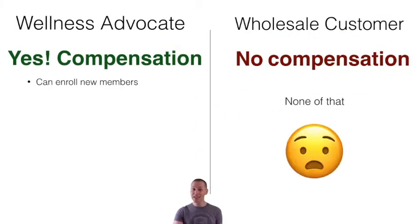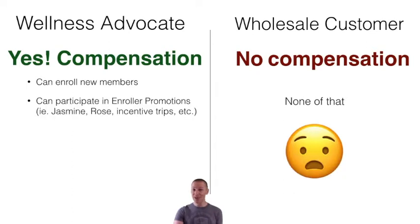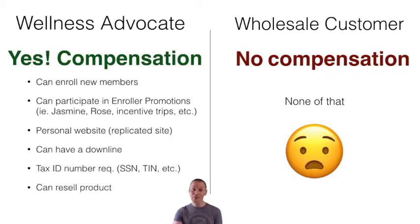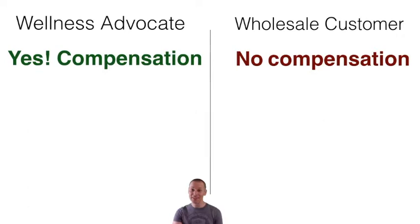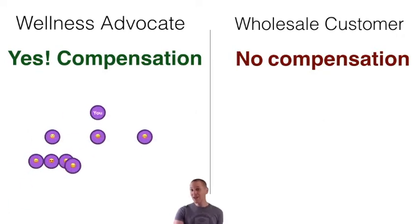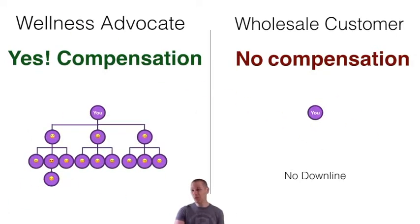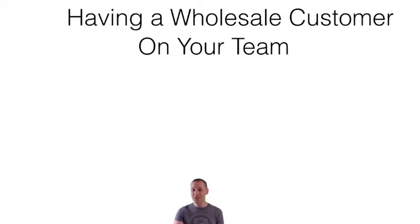This has a lot of ramifications. For instance, they can't enroll people, participate in enroller promotions, have a personal website, have a downline, tax ID number, resell product, or have a full mydoterra.com experience. That means they don't have a team under them. If they want to sign someone up, they need to give them to a wellness advocate or become one themselves.